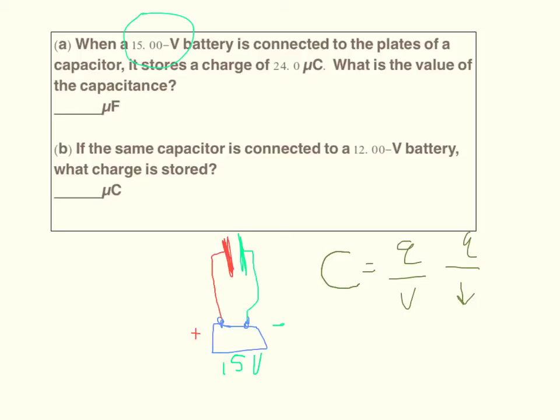Capacitance is telling me with this given voltage I can get a given charge. So if I were to change this to 12 volts, the charge would also go down, but the ratio of the volts to the charge would stay the same.